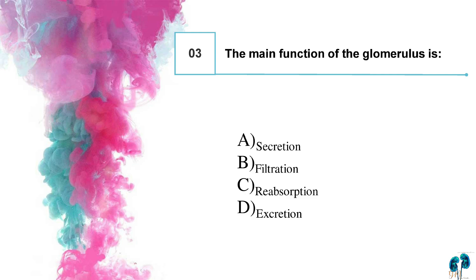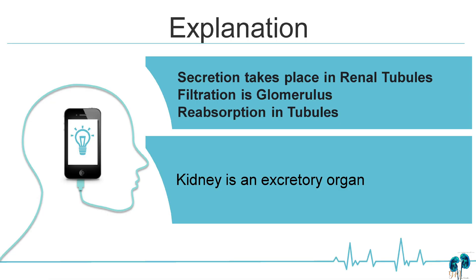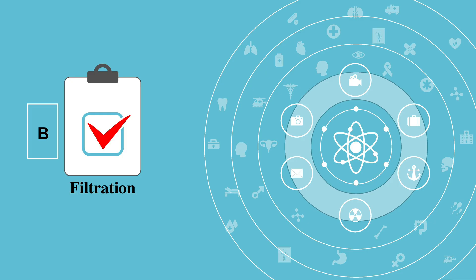The main function of the glomerulus is: option A, secretion; option B, filtration; option C, reabsorption; option D, excretion. Secretion takes place in the renal tubules, filtration is in the glomerulus, reabsorption is in the tubules, and the kidney is an excretory organ. The right answer is option B, filtration.